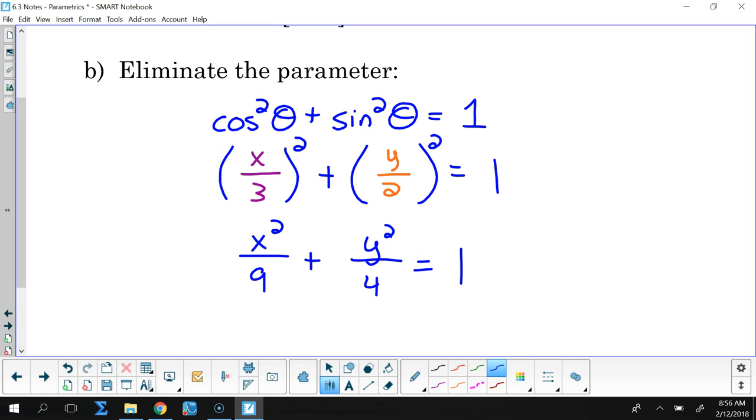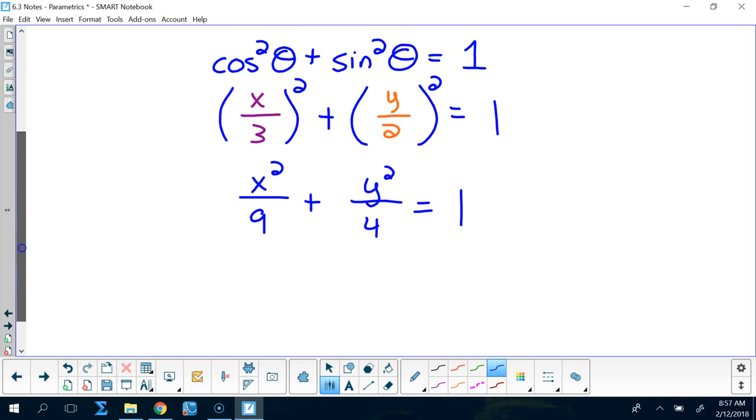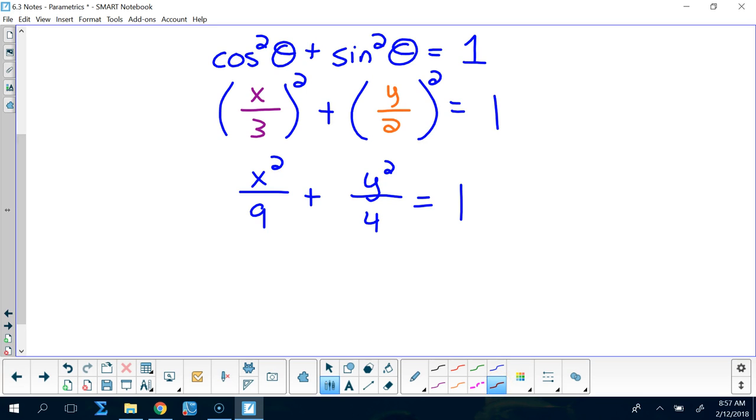And that is the algebraic equation for an ellipse. An ellipse is x minus h quantity squared over a squared plus y minus k quantity squared over b squared equals 1, the equation of an ellipse centered at h comma k with a major axis of a and a minor axis of b. So the longer one has a half length of a and the shorter axis has a half length of b.